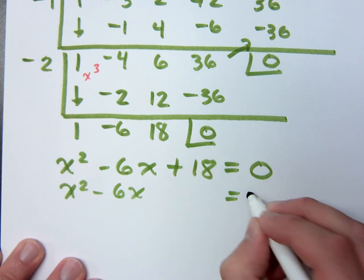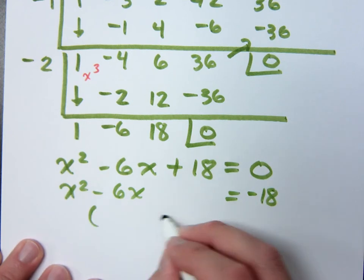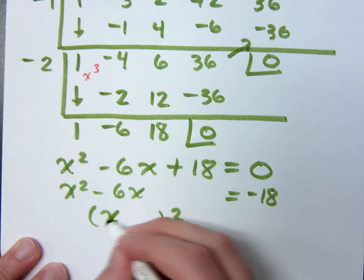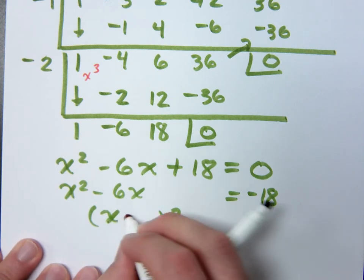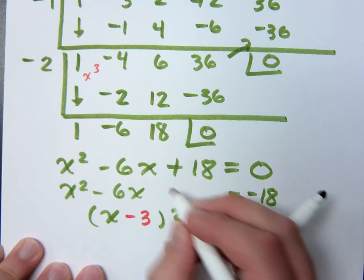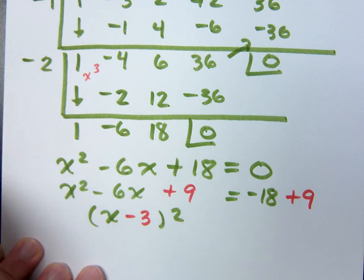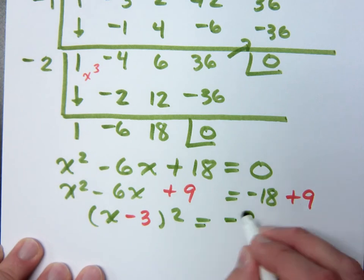Move the 18 over. What number will complete the square? Half of negative 6 is negative 3. What's 3 squared? You have to add that to both sides, right?